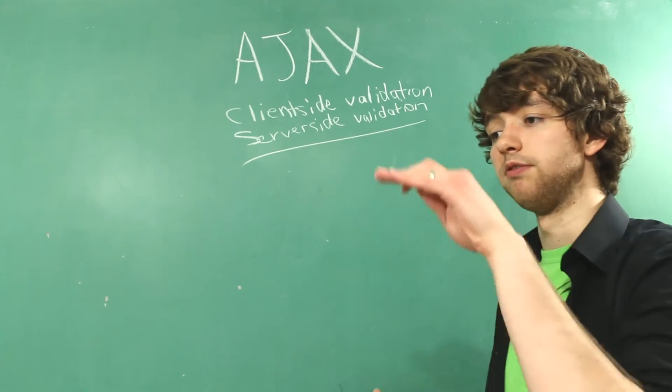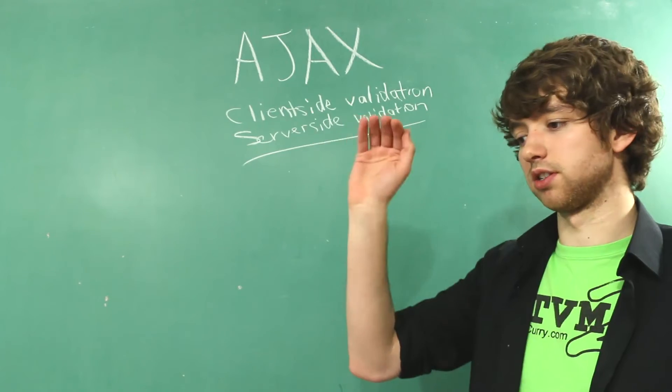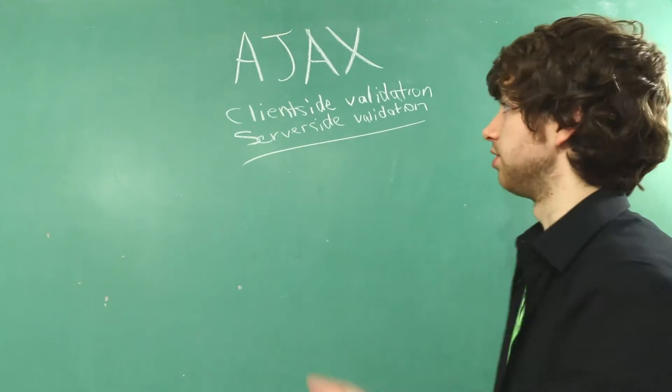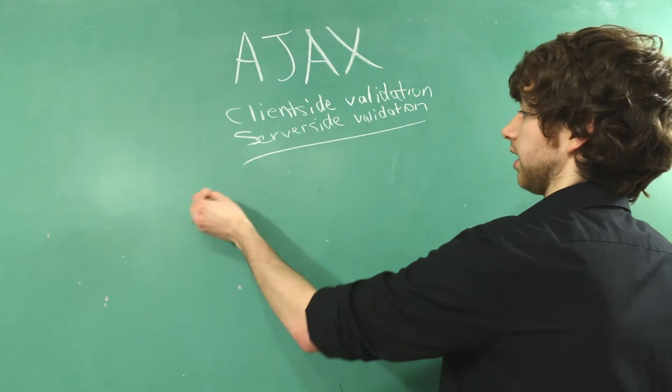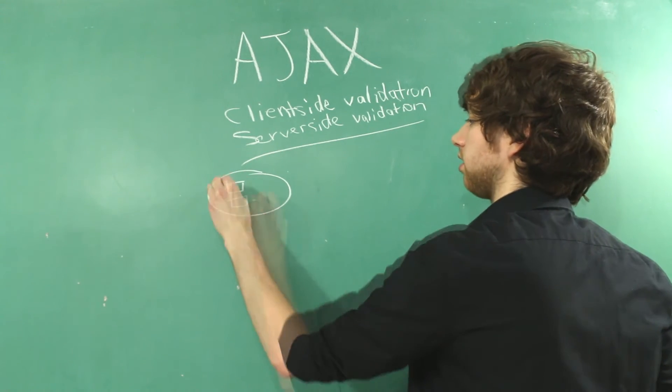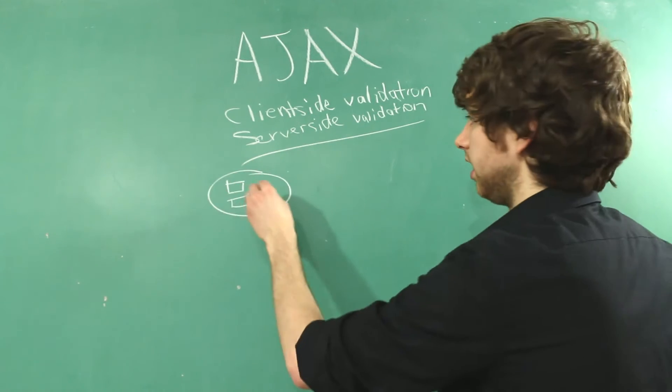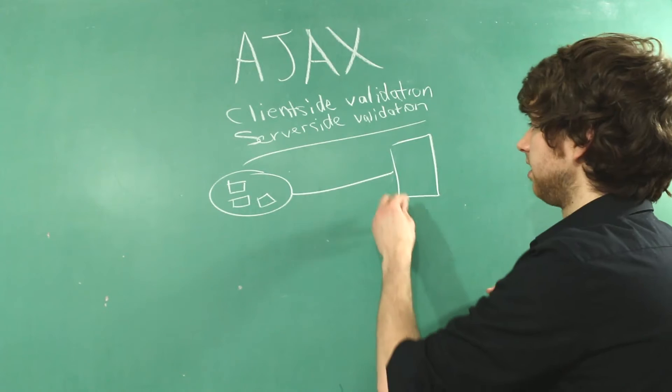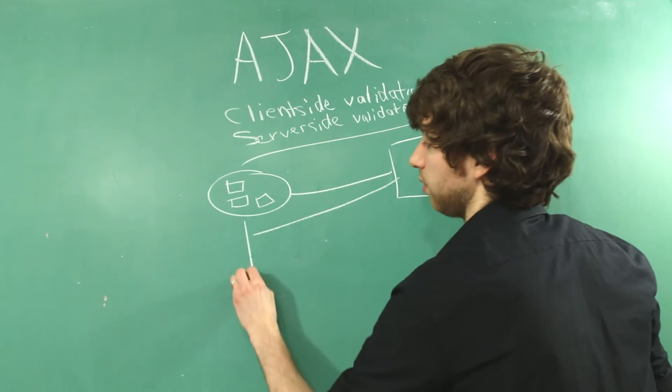Now, once you leave a form element, such as an input box, it can use an AJAX request to send the data. So, like, let's say we have this form here, and here's all the data. It gets sent to the server. The server validates it, and then sends it back to the web application.